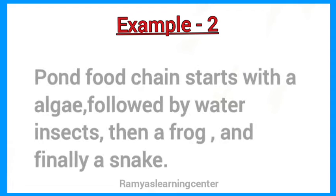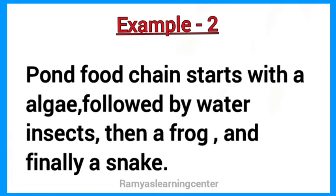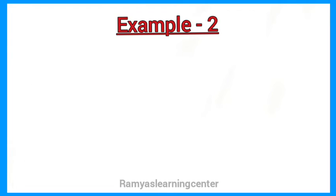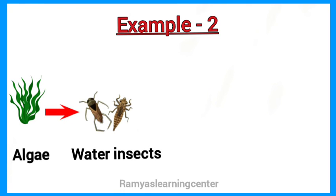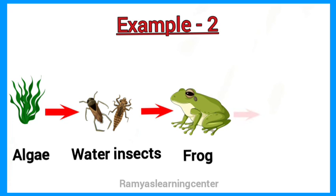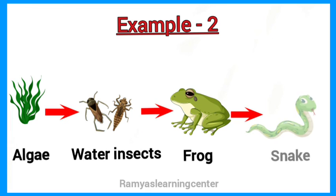Example 2. Pond food chain starts with algae, followed by water insects, then a frog, and finally a snake. It can be shown like this: algae is eaten by water insects, water insects are eaten by frog, and frog is eaten by snake.